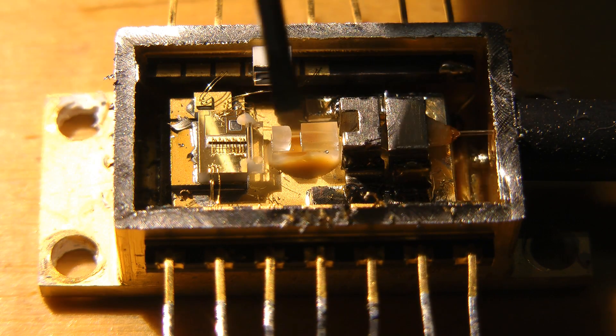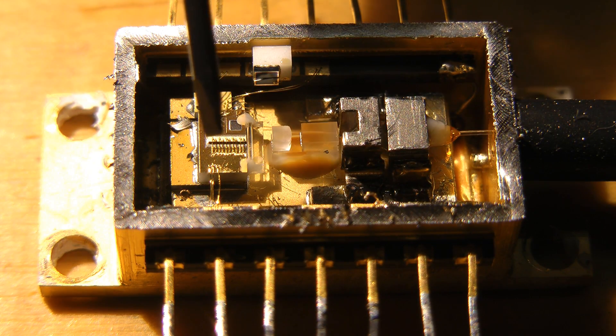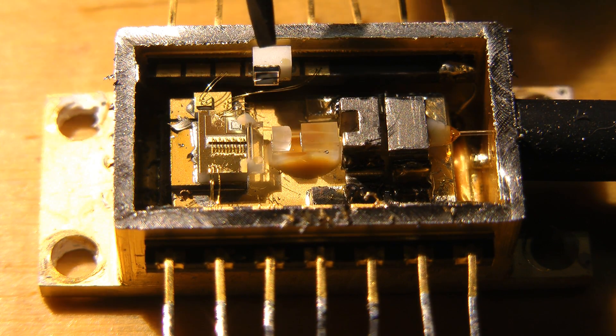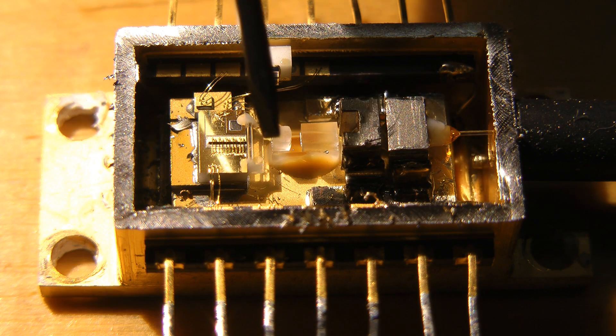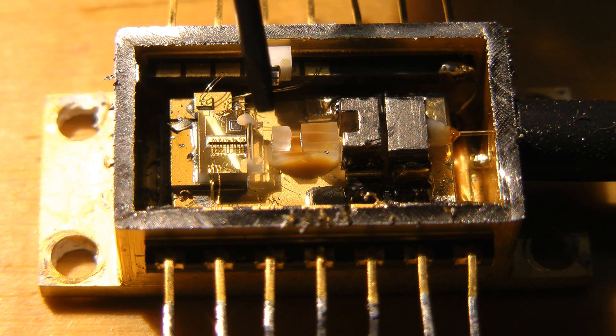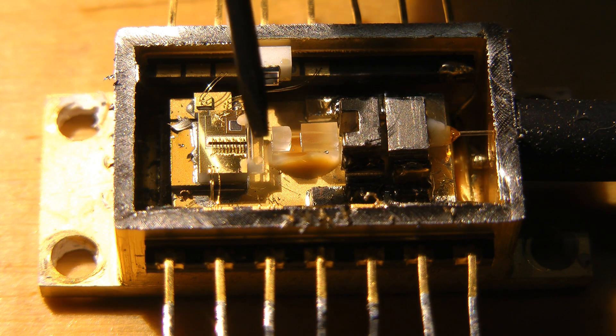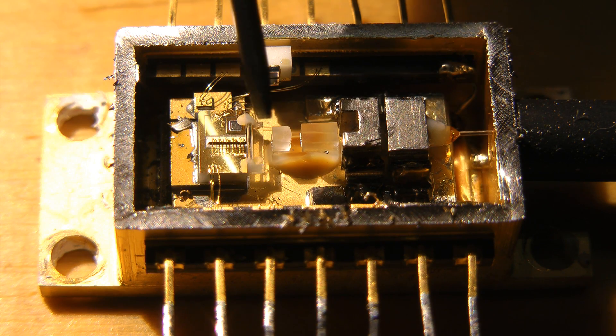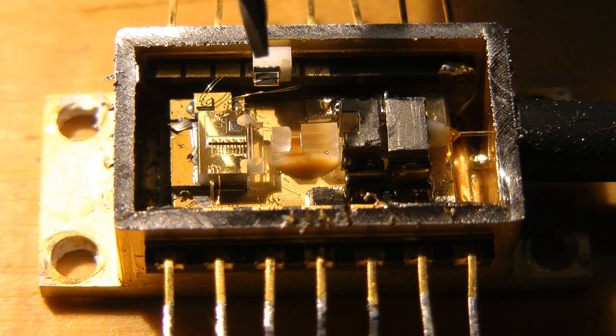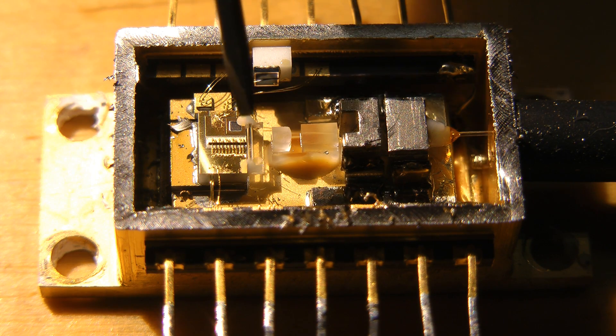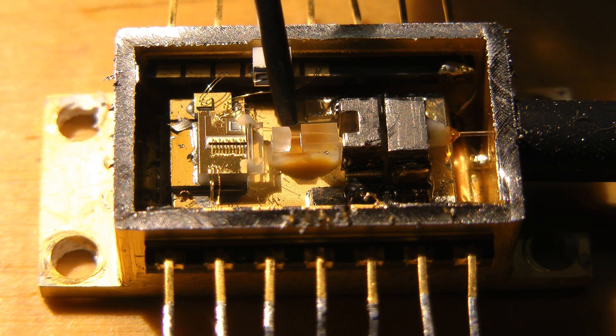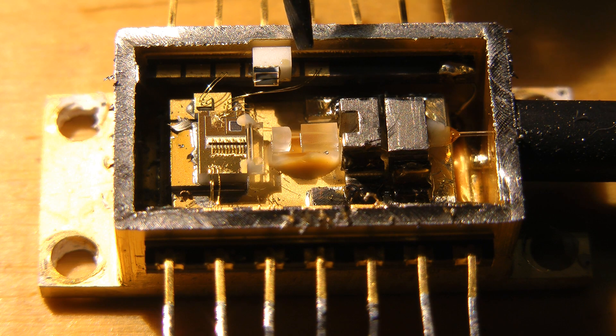In here we have a laser diode on the left here, you can see the bond wires running to it. Just after that there are two collimating lenses, one that is cylindrical, effectively. This one collimates the wide diverging beam in one axis, the second one collimates the much more narrowly diverging beam in the other axis.